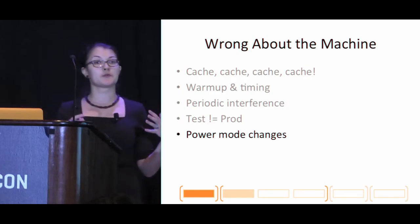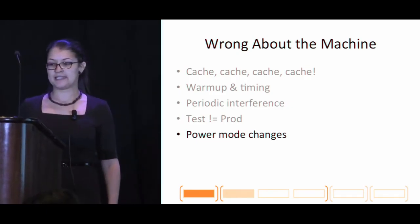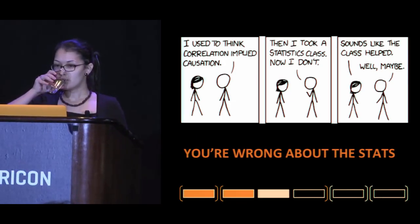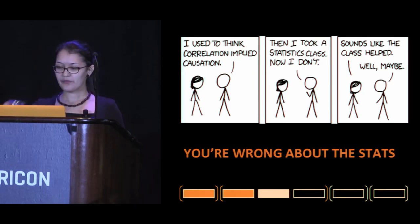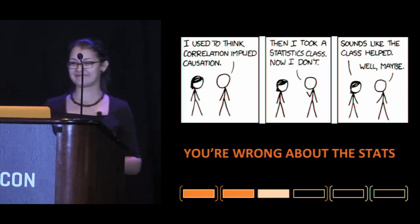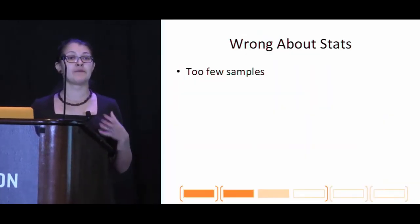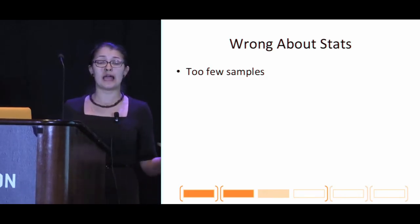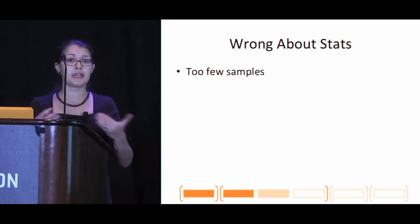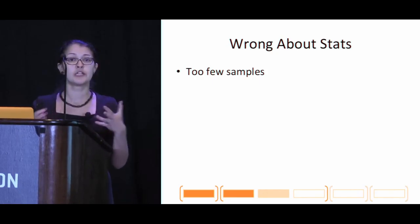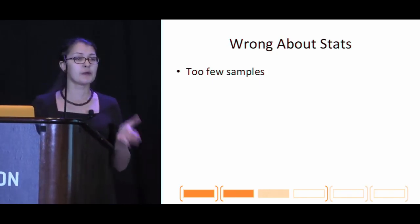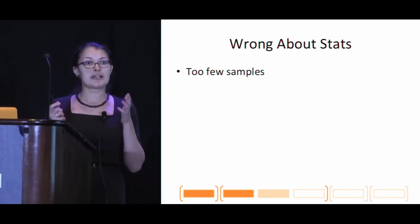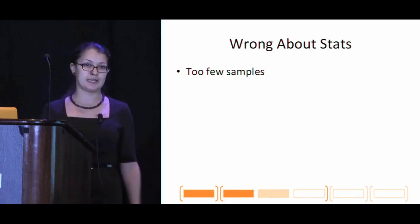We just talked about common pitfalls when reasoning about machines. Now let's talk about stats. One common pitfall is not having enough data. With too few samples, you may include outliers and not know what your distribution is like. How many runs is enough for conclusive results? That depends on your application, but there are good approaches you can take.